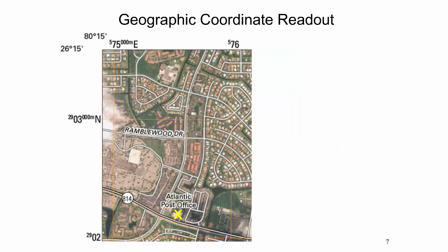To obtain geographic coordinates for a point, one needs to identify a nearby line of latitude and longitude through tick marks or the map corners. Then the distance from this reference grid line to the point of interest must be measured in inches using an engineer's scale or ruler, and then converted to seconds using the earlier established inch-to-second ratio. Finally, the computed seconds must be added or subtracted from the latitude and longitude values of the chosen reference grid lines. As an example, we determine the geographic coordinates of the southeast corner of the Atlantic Post Office in Coral Springs, Florida, found on the Fort Lauderdale North Quadrangle.